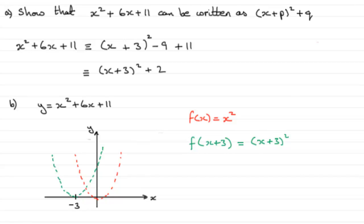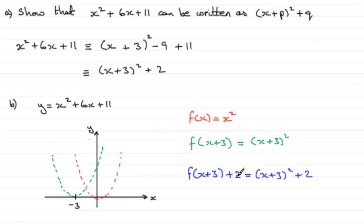Now we can go for the final graph. If we just take f of x plus 3 and then add 2, what we've got is x plus 3 all squared plus 2. What this does to any graph is it shifts it — it translates it upwards by two units, parallel to the y-axis. So imagine the green graph now moved upwards by two units, giving a graph that looks something like this.